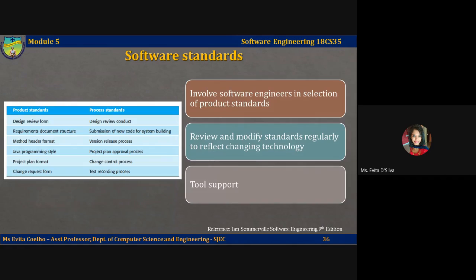Product standards have to be designed so that they can be applied and checked in a cost-effective way, and process standards should include the definition of processes that check that product standards have been followed. Quality management teams developing standards for a company should normally base these on national and international standards. Using international standards as a starting point, the quality assurance team should draw up a standards handbook that defines the standards needed by the organization.